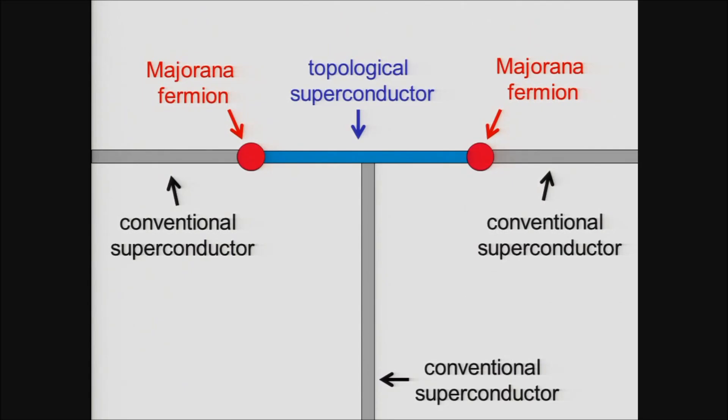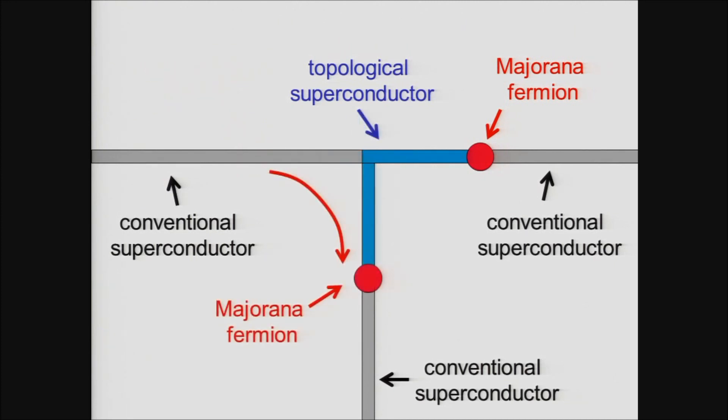And if I want to exchange the positions of two of these Majorana fermions, I can do it in three steps. First, by using electric fields, move the Majorana fermion around the corner of the T junction and park it.